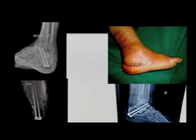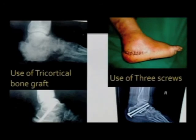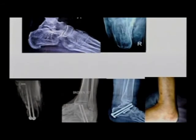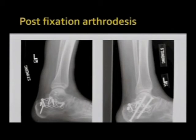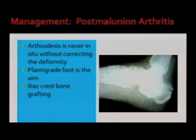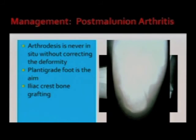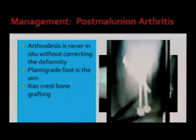These are cases where subtalar fusion was done post calcaneal malunion — you can use a tricortical bone graft and three screws. Sometimes you also need to do post-fixation arthrodesis. What is important: malunion should never be fused without correcting deformity. Arthrodesis is always performed with correction of deformity; the aim is to give a plantigrade foot, and you may need iliac crest bone grafting.